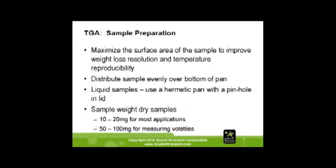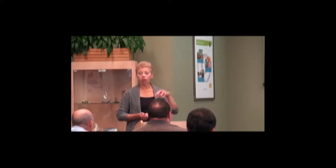You want to maximize your surface area — it will improve your weight loss resolution and your temperature reproducibility. You want to distribute the material evenly over the bottom of the pan. Liquids can be run in hermetically sealed pans with a hole in them. When you run a liquid on a TGA pan it tends to boil over the edge, so it's nice to hold it inside a sealed pan. Sample sizes of 10 to 20 mg for most dry applications and 50 to 100 mg for other measurements.